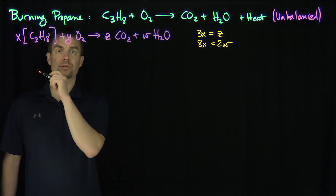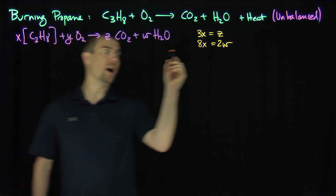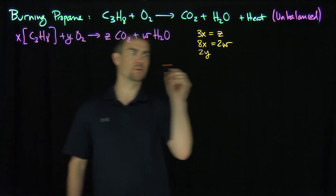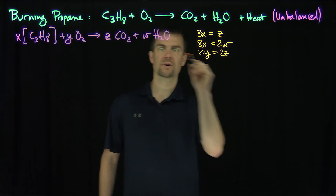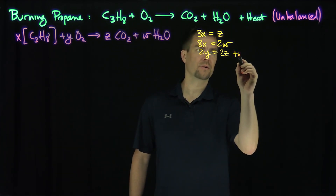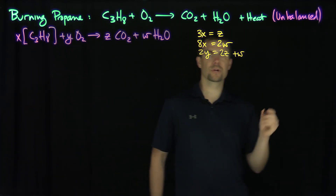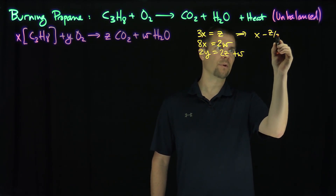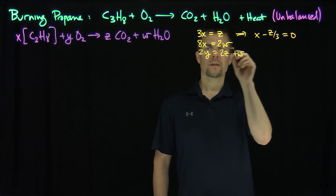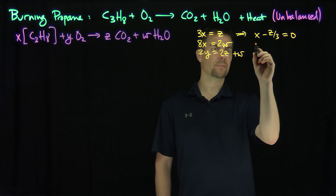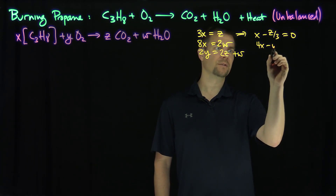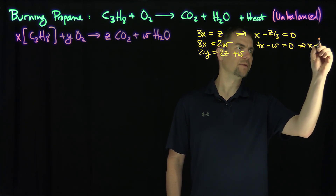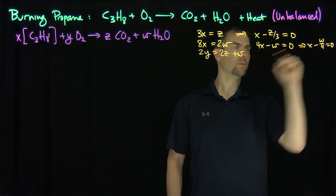Now oxygen: we have 2Y oxygens on the left, and on the right we have 2Z oxygens plus 1W oxygen. Turning these into equations: from carbon, X minus Z over 3 equals 0. From hydrogen, 4X minus W equals 0, or equivalently X minus W over 4 equals 0.